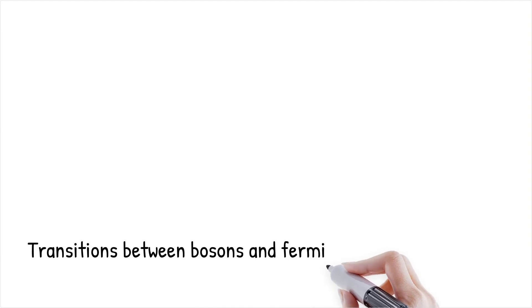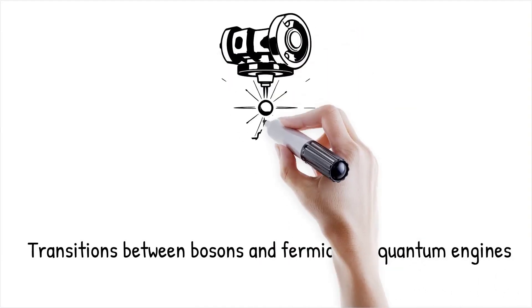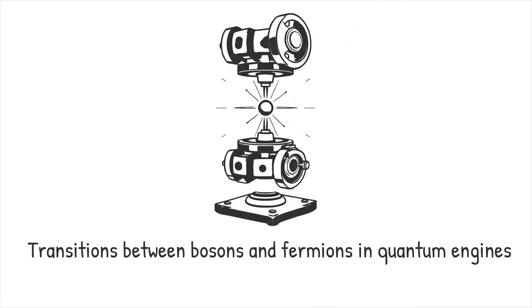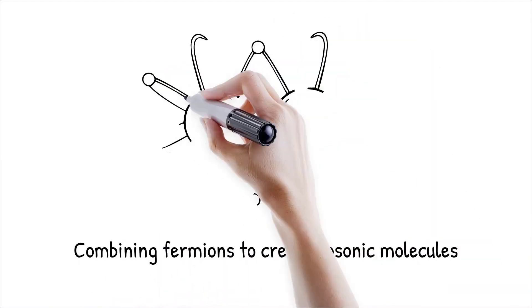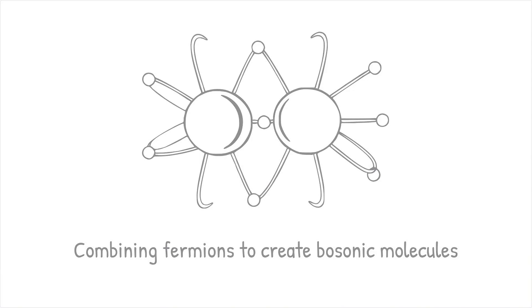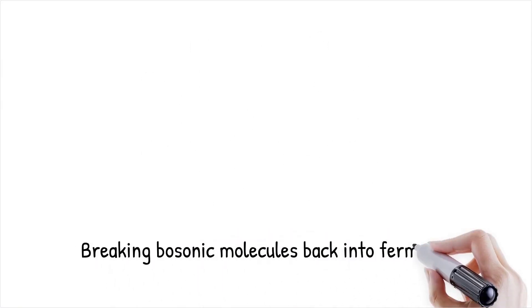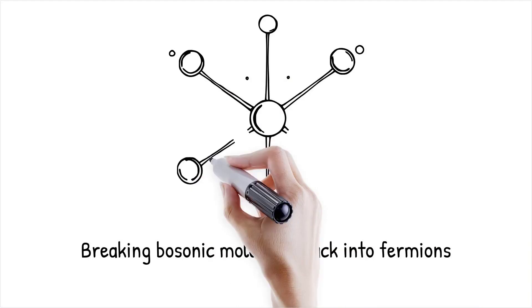In the quantum engine, transitions between these particle types generate energy. Combining two fermions (e.g., two lithium-6 atoms) creates a bosonic molecule. Breaking this bosonic molecule into individual fermions reverses the process.